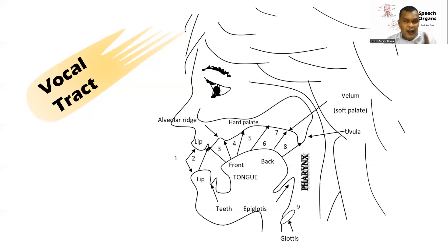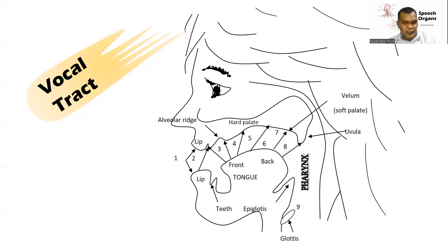Next we have the hard palate. The hard palate is exactly located in the middle — the upper side — of our mouth, and that surface is usually hard. That's why it's called the hard palate. And when we move backward, we have the soft palate — the part of the palate which is softer. That's why it's called the soft palate. The soft palate is also known as the velum.